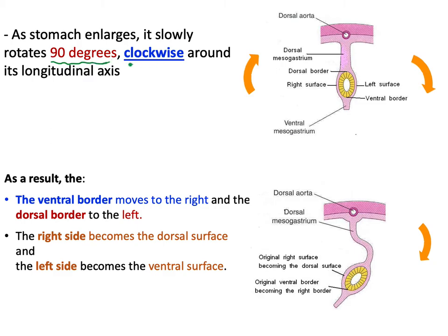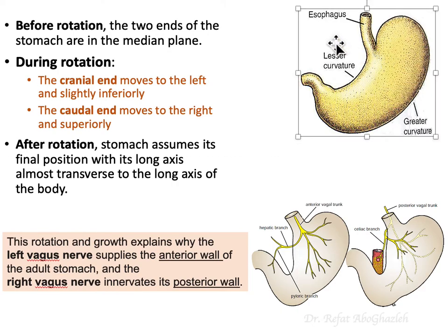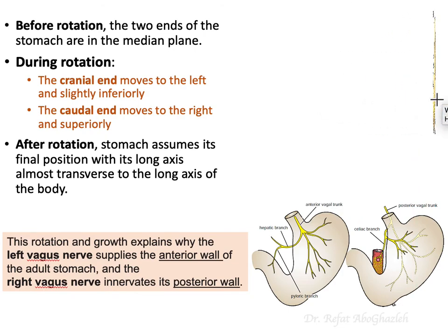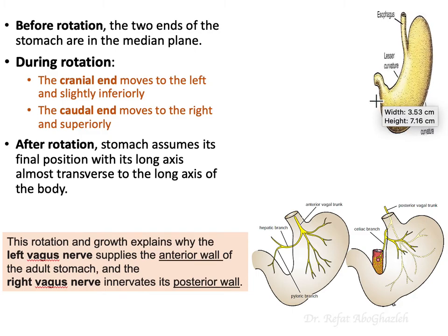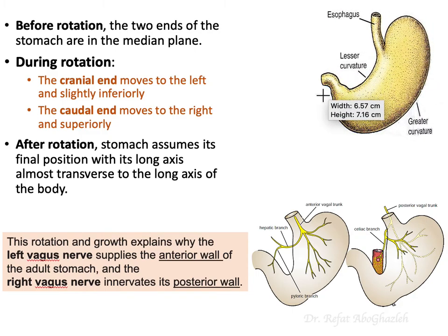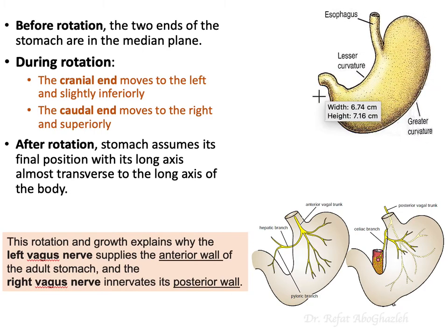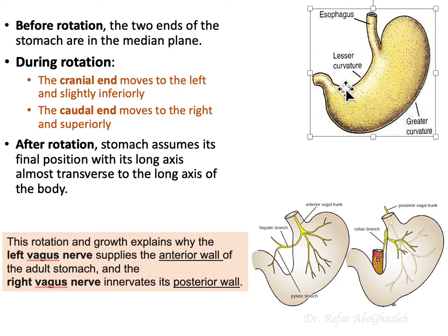The stomach rotates 90 degrees clockwise around its longitudinal axis. The stomach was oriented anterior-posterior, but with the 90-degree clockwise rotation it moves to approximate its final position. This is the position of the stomach in the adult.